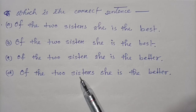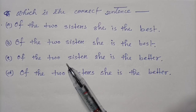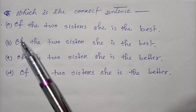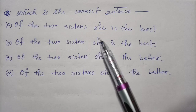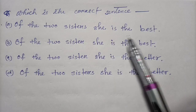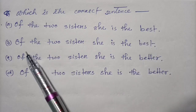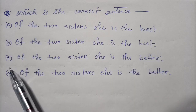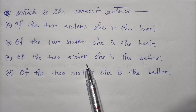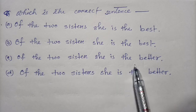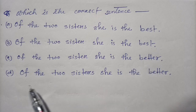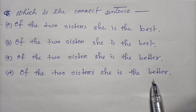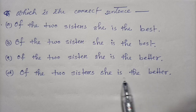A question for today: which is the correct sentence? A) The best of the two sisters, she is the best. B) Of the two sisters, she is the better.